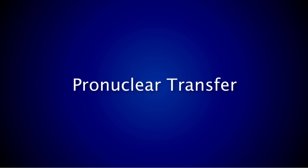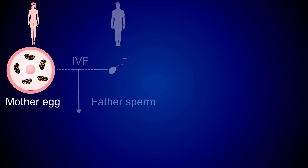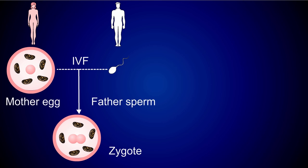The pronuclear transfer method is a slightly different method of getting to the same endpoint: an embryo with the mother and father's DNA, in a cell that has mitochondria free of any defective genes. With this method, standard IVF techniques are used to create an embryo. The mother's egg is fertilized by the father's sperm, forming a two-pronuclear zygote. This very early embryo contains maternal mitochondria with defective genes.